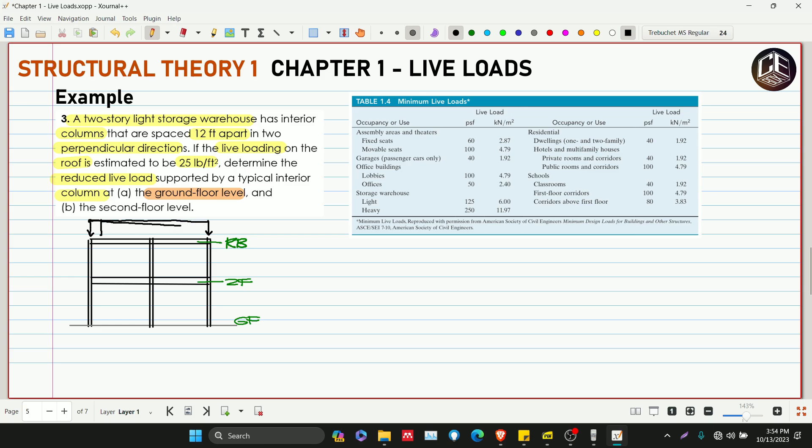Then again, kagaya sa ating problem number two, hindi natin kailangan i-reduce ito. Itong roof live load is possible na galing sa ating truss kahit flat roof ba yan. Possible kasi na yung mga loadings na yan is galing sa iba't ibang hindi sya kagaya dito sa minimum live loads na nasa table natin.